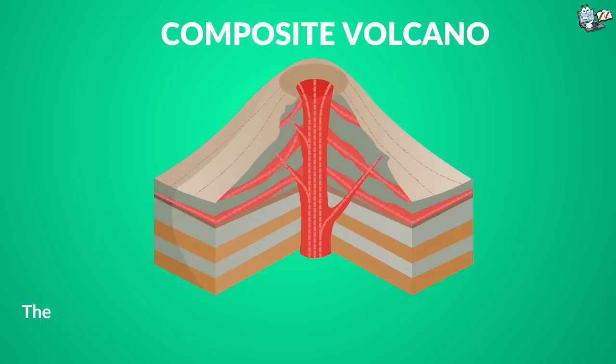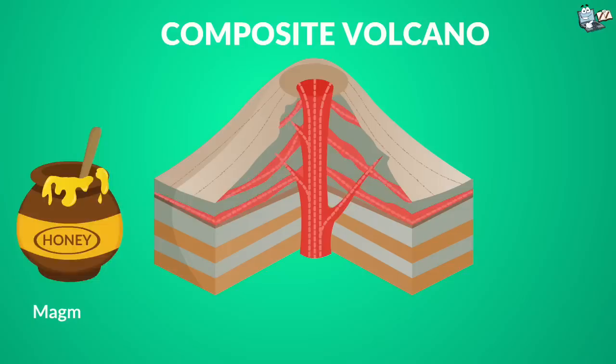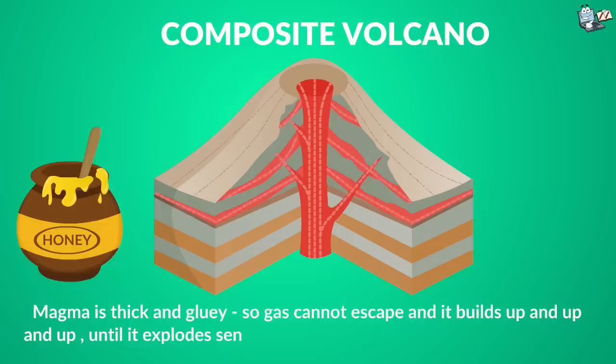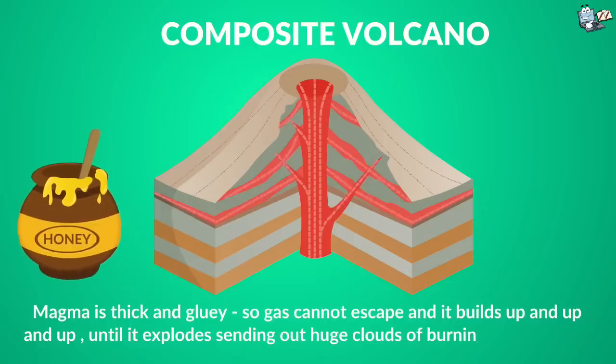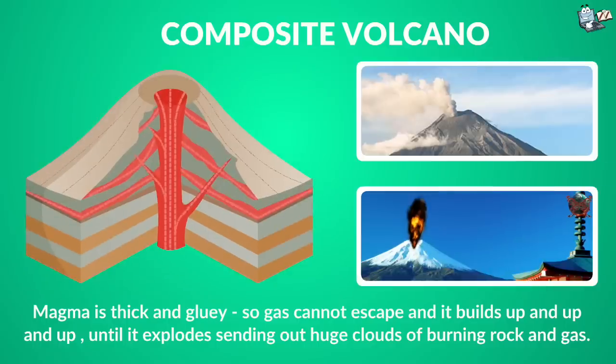Composite volcano. These are steep-sided volcanoes and composed of many layers of volcanic rocks that are usually made from the thick, sticky lava, rock debris, and ash. In this, the magma is thick and gluey, like honey, so gas cannot escape and it builds up and up and up until it explodes, sending out huge clouds of burning rock and gas. Some examples are Mount Kotopaxi in Ecuador and Mount Fuji in Japan.